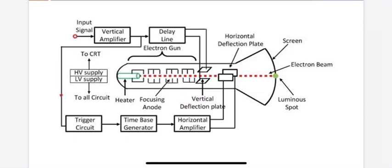Finally, the power supply consists of two blocks: high voltage supply and low voltage supply. The high voltage supply is used to power the electrodes of the CRT (cathode ray tube). The low voltage supply is used to power the electronic circuits such as the time-base circuits and amplifier circuits.